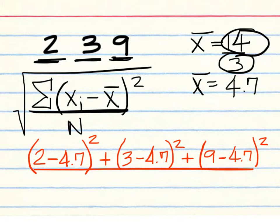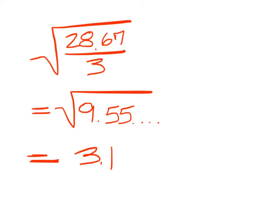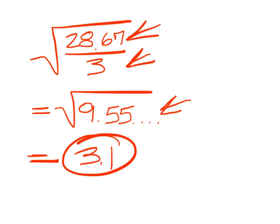How many numbers are in the list? 3. So you're dividing all that by 3. And once you get that answer, you need the square root of what it comes out to be. It simplifies to 28.67. Divide that by 3. And you get 9.5. And then 6 repeats. Find the square root, and the standard deviation should be 3.1.